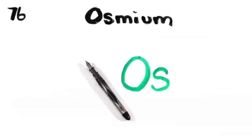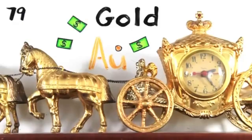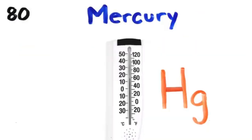Rhenium, osmium, iridium, and platinum, gold to make you rich till you grow old, mercury to tell you when it's really cold.